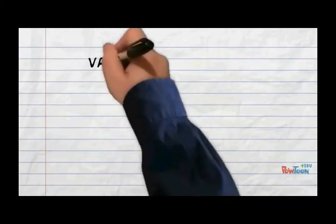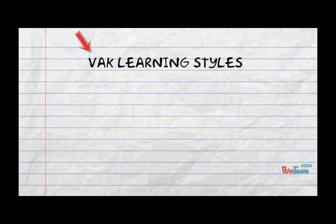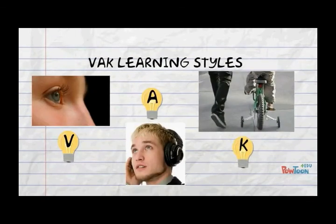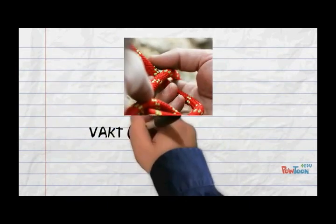The VAK Learning Styles uses the three main sensory receivers: visual, auditory, and kinesthetic, which refers to movement or doing. Although technically part of kinesthetic, T is sometimes added for tactile or touch.